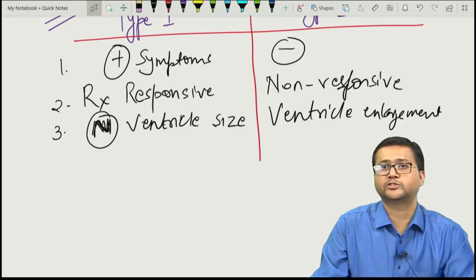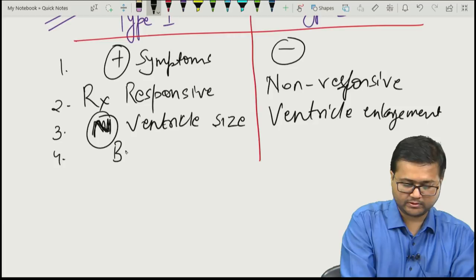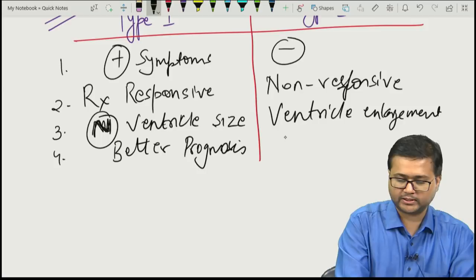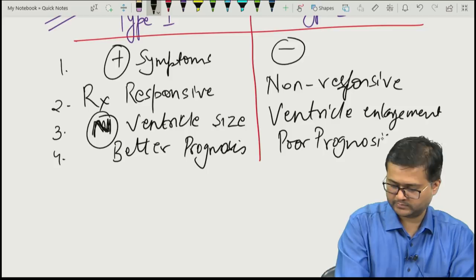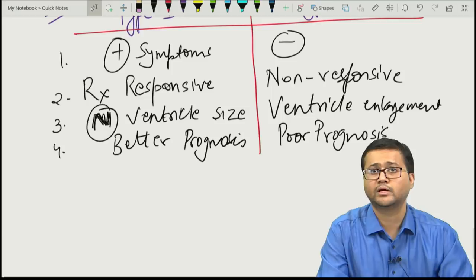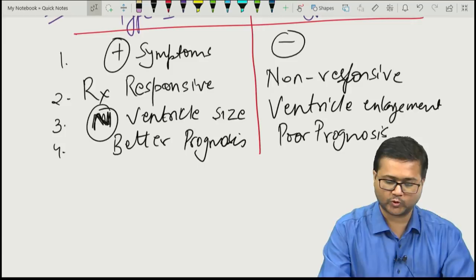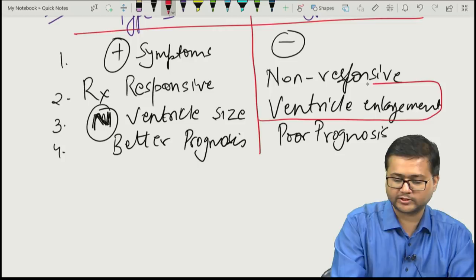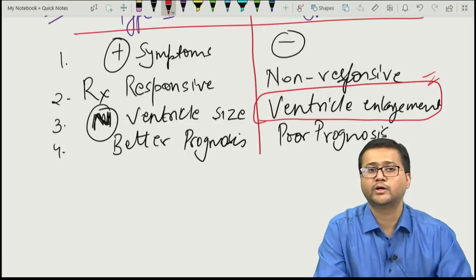Type 1 would have a better prognosis while Type 2 showed poor prognosis. These are important differentiating criteria between Type 1 and Type 2, as described by T.J. Crowe. Hence, ventricular enlargement may be seen in patients with schizophrenia, although some may have a normal ventricle size.